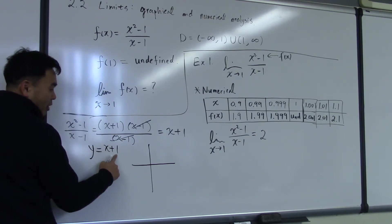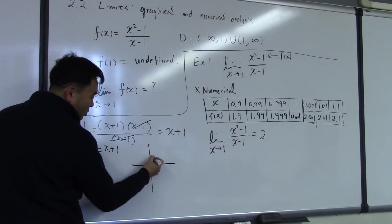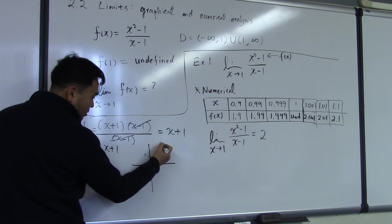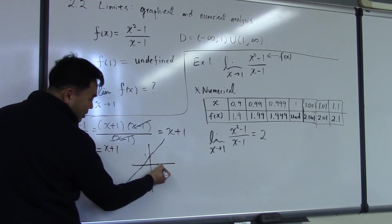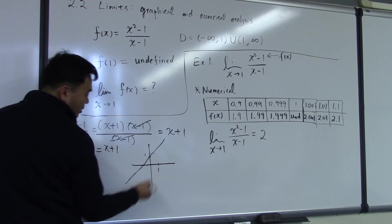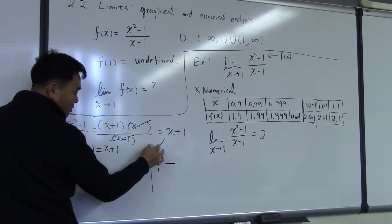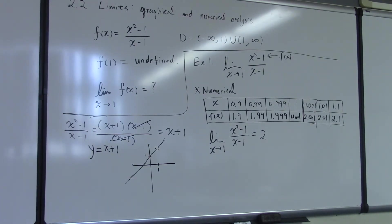So let's think about it. First, do you know how to draw y equal to x plus 1? That's easy. It's a slope 1, y intercept 1. So here's 1 here. And here's a slope 1 straight line. However, because at 1 it's not defined, there's a hole there.